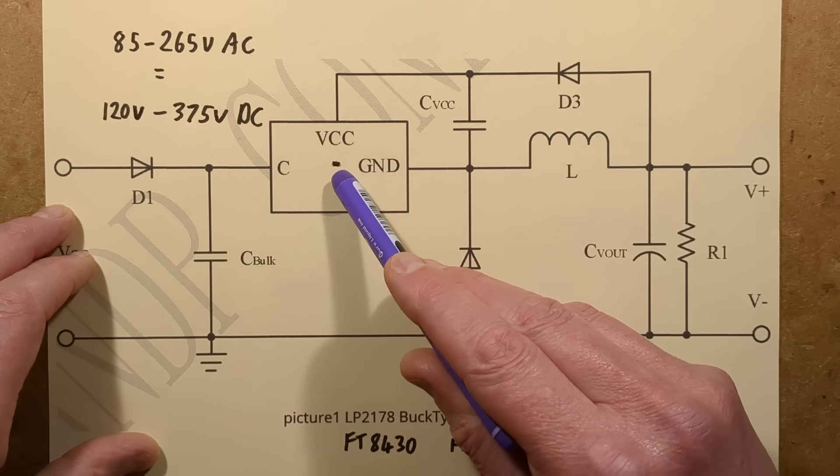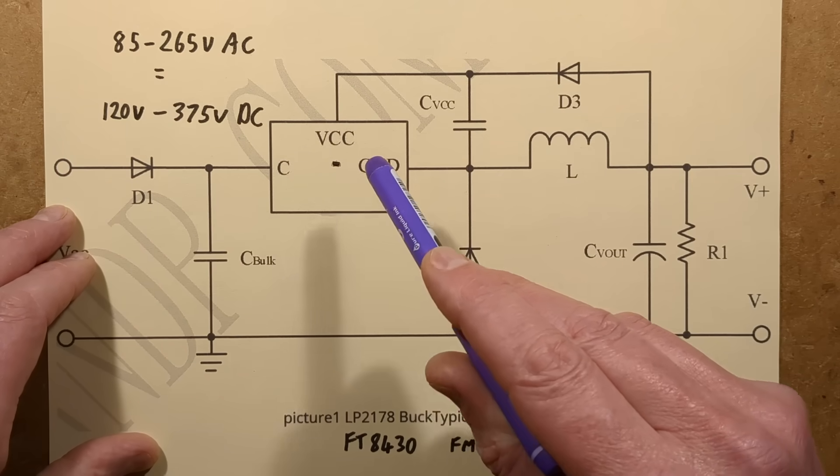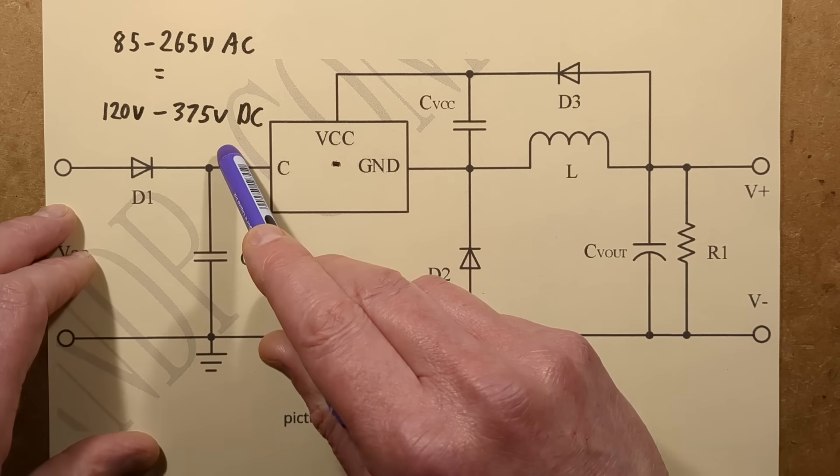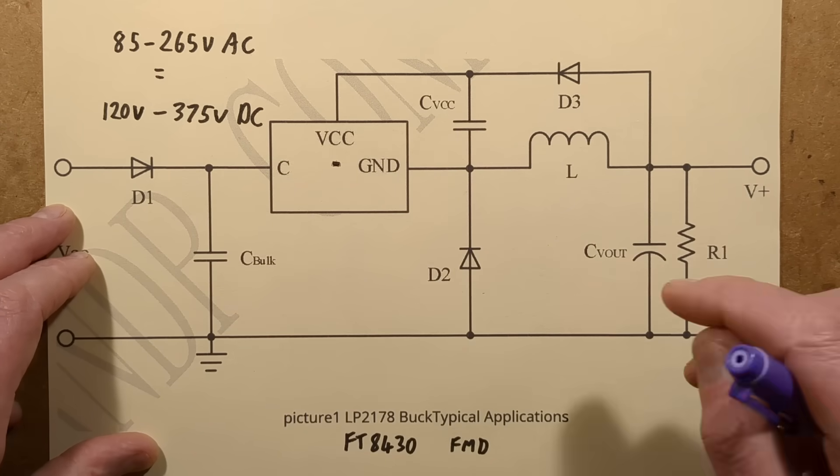I mean they're so small, that's one there. See that little tiny transistor thing? That's one of these components that is taking that 375 volts in and creating a 5 volt supply.